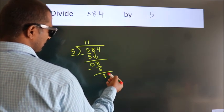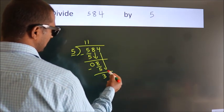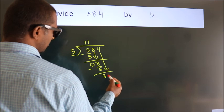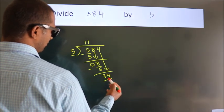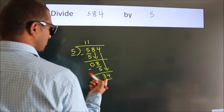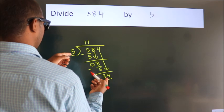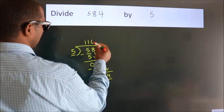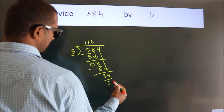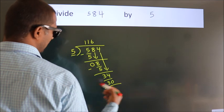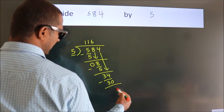After this, bring down the beside number. So, 4 comes down — so we have 34. A number close to 34 in the 5 table is 5 times 6, which is 30. Now we subtract. We get 4.